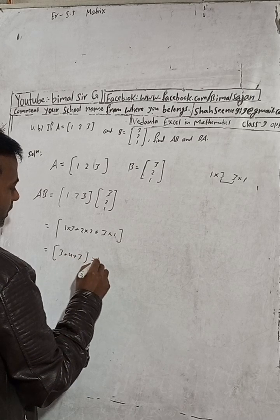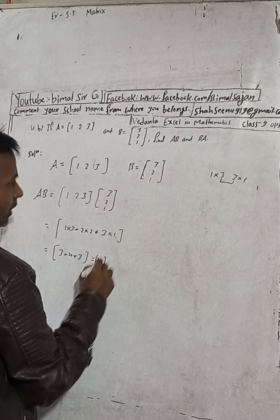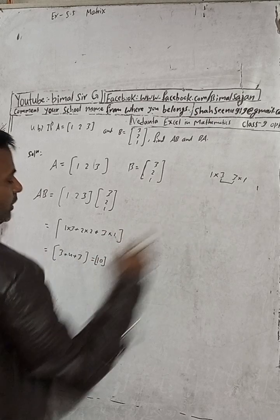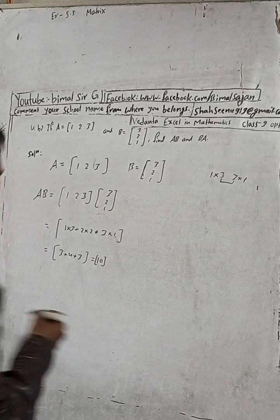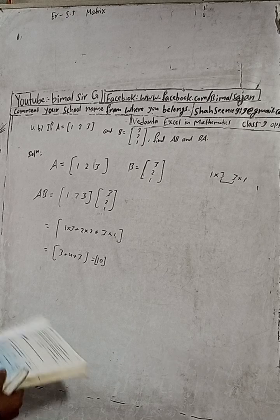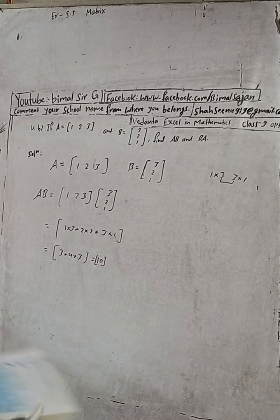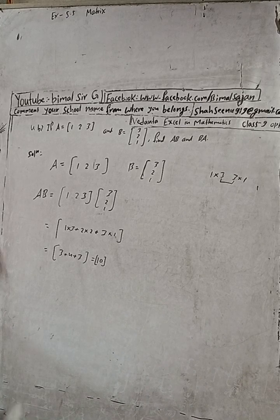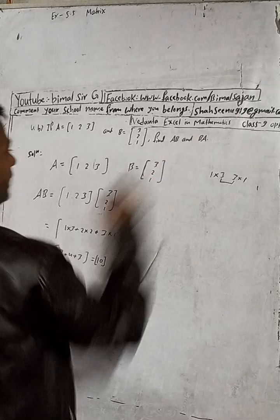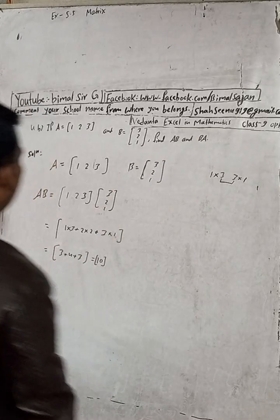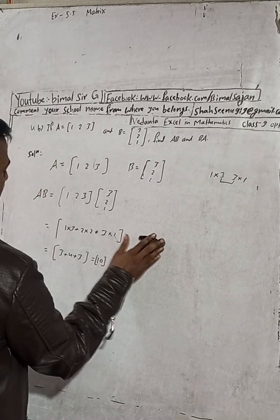So our answer is 3 + 4 + 3 = 10. This is our answer: 10. It is a 1×1 matrix. So the answer is 10. Now the second part: to find B·A.